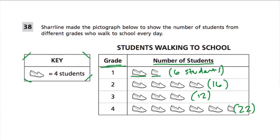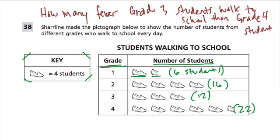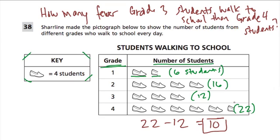They ask us two questions. The first asks: how many fewer grade 3 students walk to school than grade 4 students? All they're asking is, if I take 22 and subtract 12 from it, what's the answer? That's just 10. So the answer is 10, because 12 plus 10 is 22. There are 10 more students in grade 4 that walk than in grade 3.